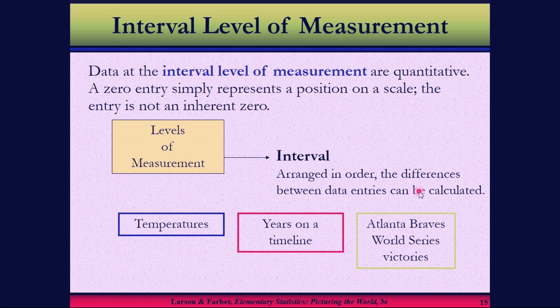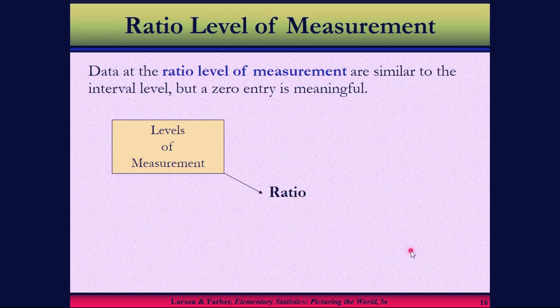Another example is years on a timeline. You can order them and calculate differences. Zero doesn't mean nothing - it's just a reference point. Atlanta Braves World Series victories is another example classified at the interval level.